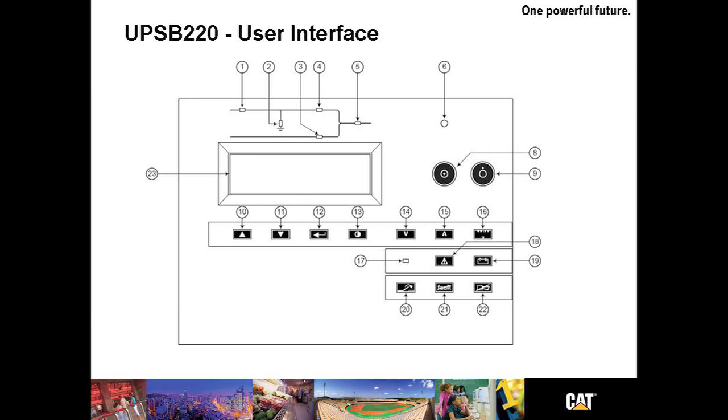Buttons eight and nine turn the inverter on and off, hence transferring the load to and from bypass. Items 10 and 11 allow you to scroll through the display, while number 12 allows you to select an item on the screen. Button 13 pages you through the list of menus. Numbers 14 and 15 allow you to choose if you are looking at volts or amps, while 16 allows you to look at watts and frequency. 18 and 19 are the alarm and battery key.